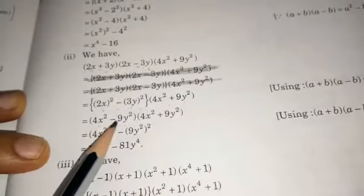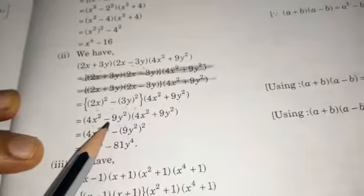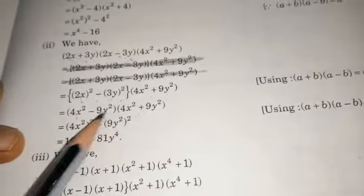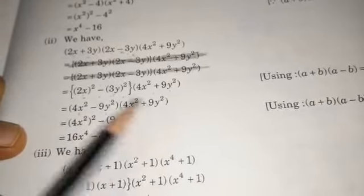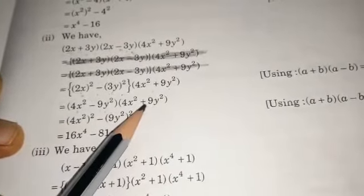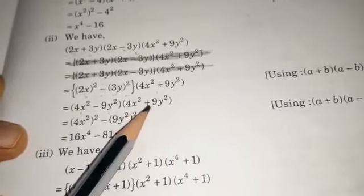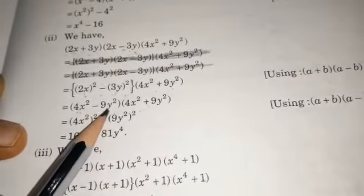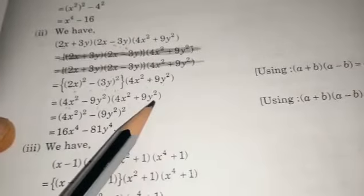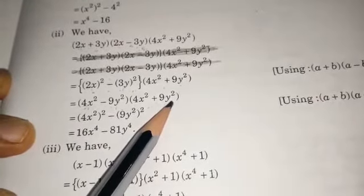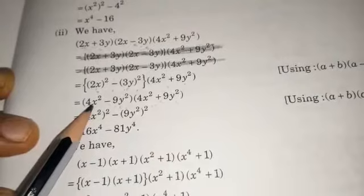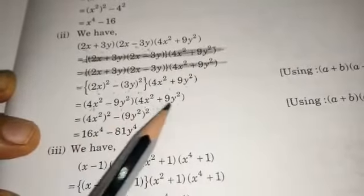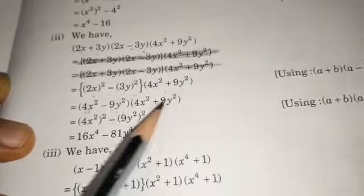We again have the same terms in both brackets: 4x² and 4x², 9y² with minus and plus signs. Clearly this is of the form (a - b)(a + b), where a is 4x² and b is 9y².